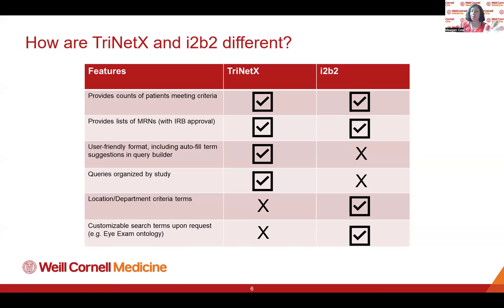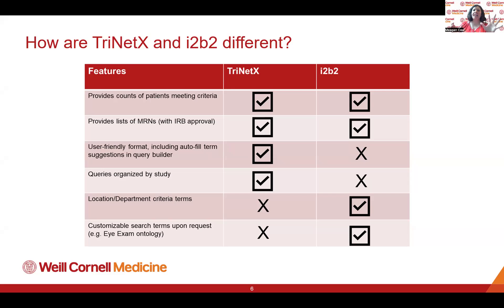There are some significant differences between TrinetX and I2B2. TrinetX tends to be more user-friendly — it has an autofill search bar that I2B2 doesn't, making it easier to find what you're looking for. I2B2 stores all queries in a general pool accessible to anyone, while TrinetX gives you a personalized folder for all the queries you're running. However, while TrinetX has great breadth of data, you get a bit more depth from I2B2, which may be better for certain queries.